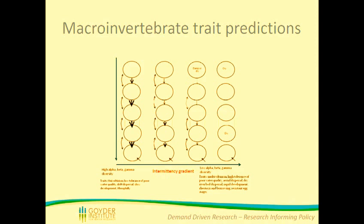To go back a little bit — traits are just the characteristics of species that they possess. One of those is univoltanism in terms of the number of generations per year. We predict that in more connected systems they would have lower numbers of generations per year, low tolerance to poor water quality, dispersal by drift, slow development, and riophily — a fancy word for flow-loving. At the drier end of the spectrum, you'd see traits such as multivoltanism — many generations per year — adaptation to poorer water quality, dispersal along dried riverbeds, rapid development to set the next generation quickly, and retreatment or burrowing into sediments as a strategy.